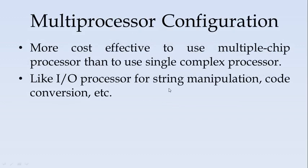What is the need for multiprocessor configuration? A single processor may not be good enough to carry out all the operations required for an application. For example, you might require string manipulation, code conversion, or trigonometric functions for some applications. All these features put together in a single processor might not be cost effective, as some applications would not require all those features. So the more cost effective solution is to use multiprocessor configuration than to use a single complex processor.